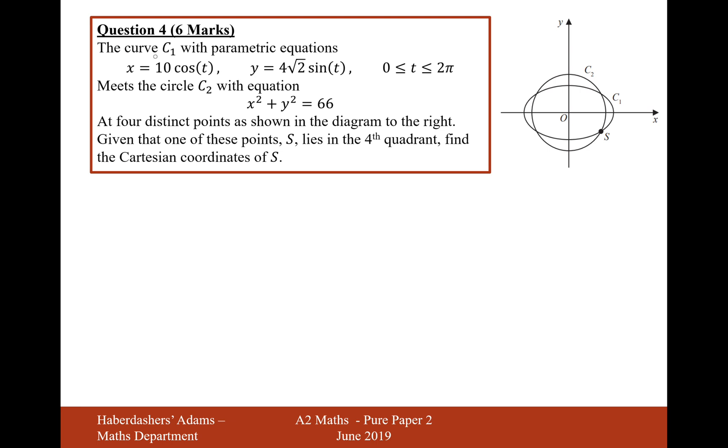So the curve C1, that's the slightly egg rugby ball shaped curve, has parametric equations x equals 10 cos t, y equals 4 root 2 sine t.